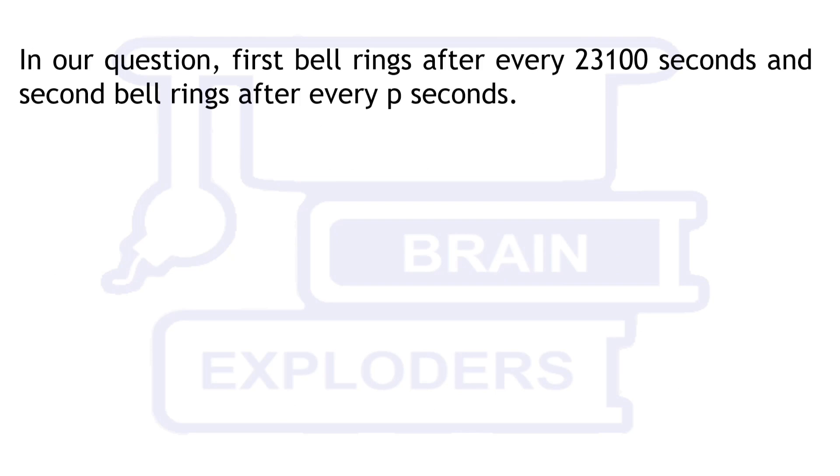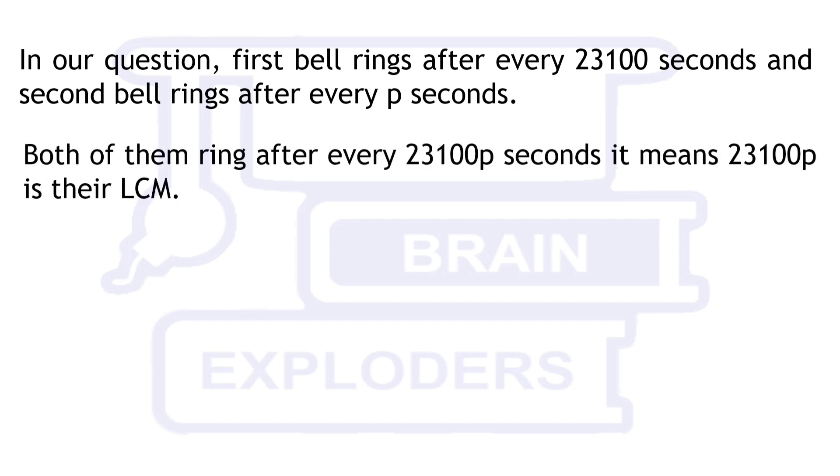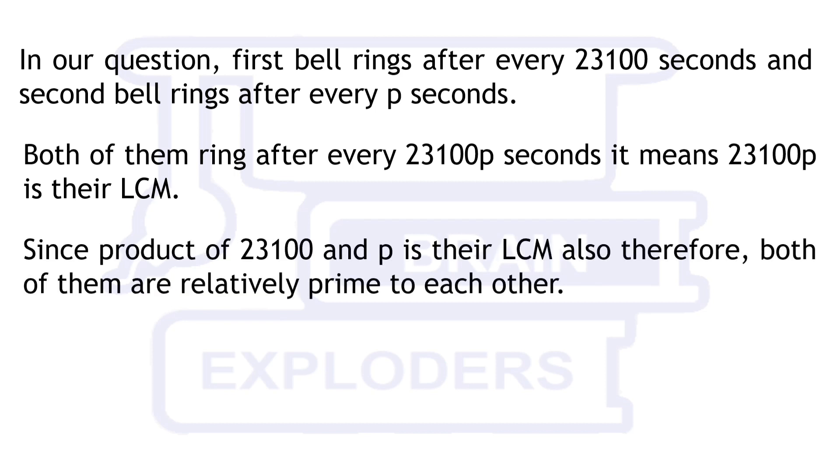In our question, first bell rings after every 23,100 seconds and second bell rings after every p seconds. Both of them ring after every 23,100p seconds. It means 23,100p is their LCM. Since the product of 23,100 and p is their LCM also, therefore both of them are relatively prime to each other.